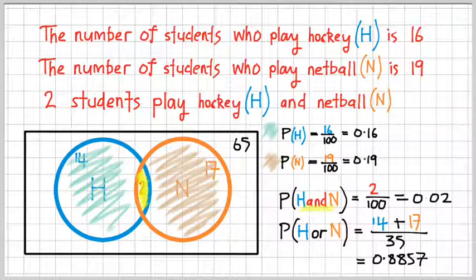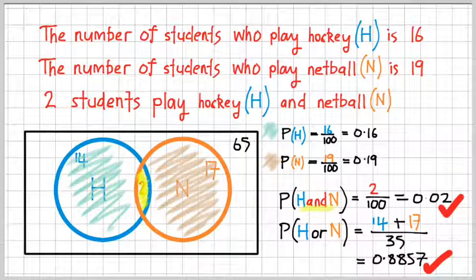Now I understand that that's an error there. What that should be is 14 plus 17 divided by 100. And you will get a different probability to 0.8857, I apologize for that. And I have a tick for the 0.02, but the one at the bottom should be a cross. But hopefully it's clear enough that you can work out, or you can replace the 35 in the denominator there by 100 and work out your probability.